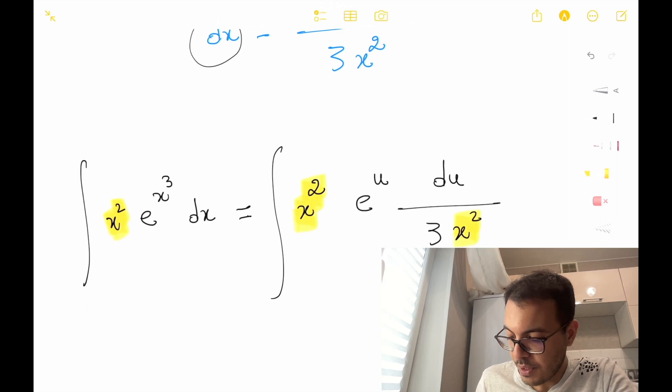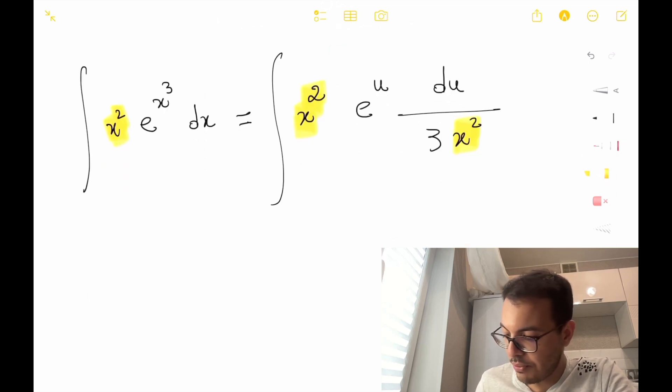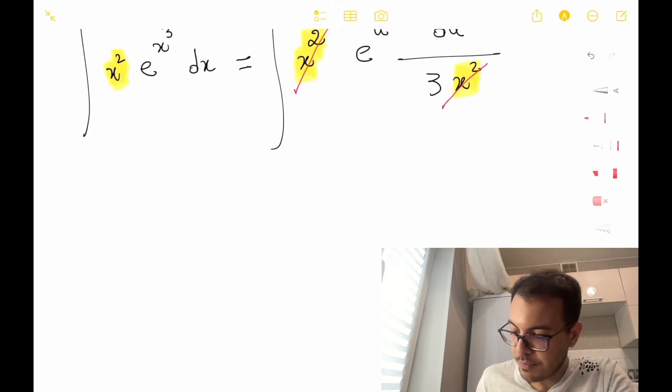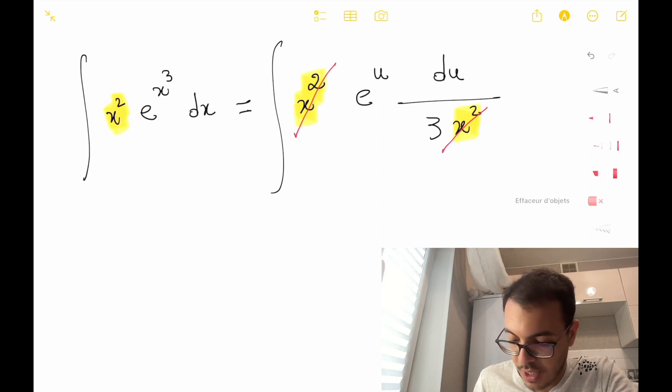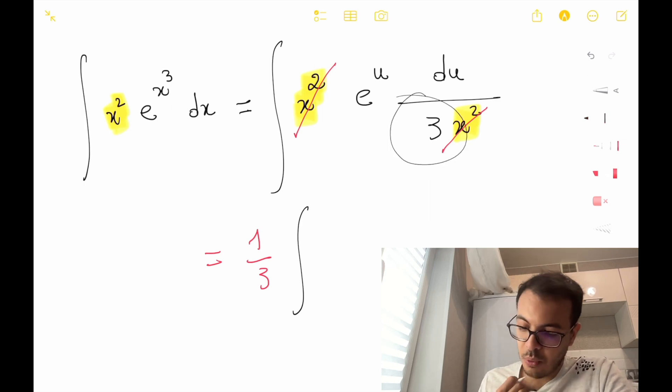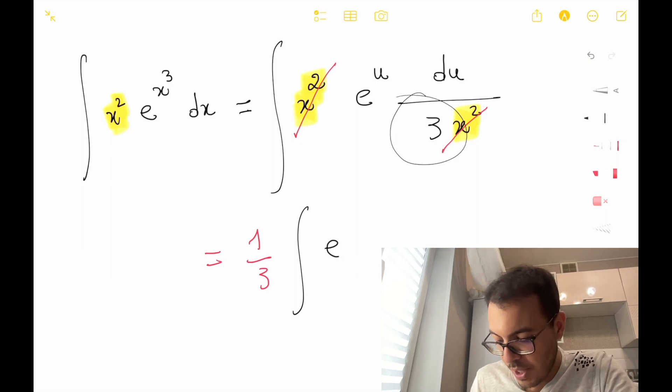We have a simplification here. We can simplify x squared and we just have 1 over 3. I can make this 1 over 3 outside, and we have just e to u du.